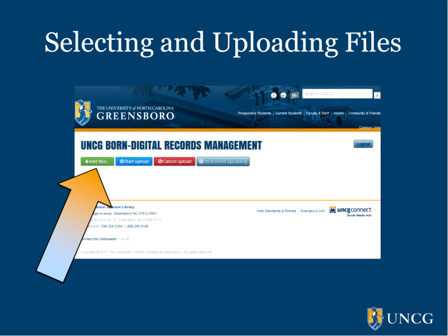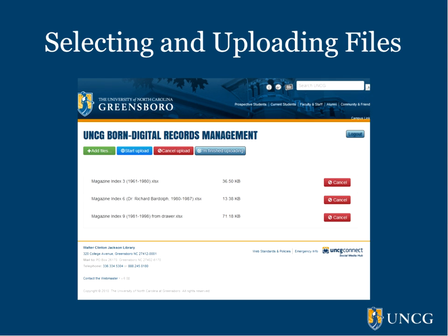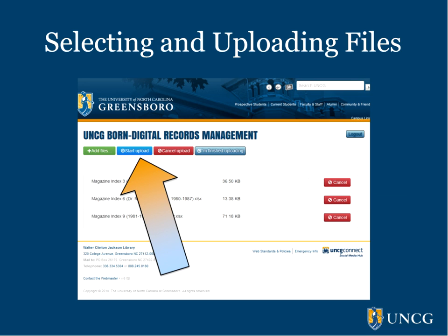Click Add Files to select the files you want to transfer to University Archives. Locate the files you want to upload on your desktop, and click Open to add these files to your transfer queue. You can add multiple files in one selection. You'll see a list of the files that you've selected on the transfer page. You can add even more files by clicking the Add Files button again. If you've accidentally added a file that you don't want to transfer, you can click the Cancel button next to the file name to delete that file from your transfer queue. When you've added all of the files you want to transfer, click the Start Upload button.